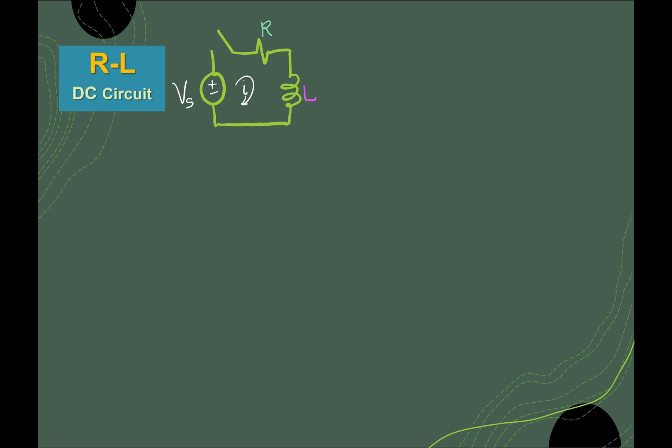We have here a RL circuit with DC source. Here we put a switch; at time equal to zero, it will become closed, making a complete closed RL DC circuit.